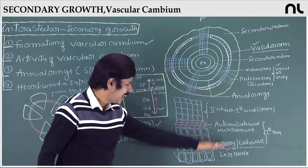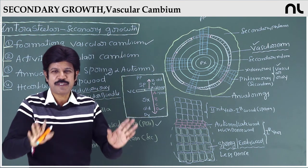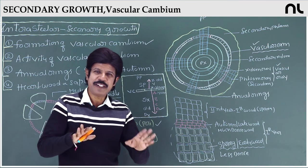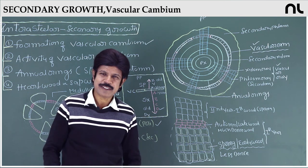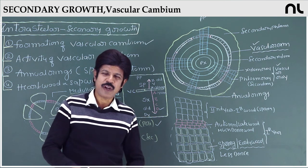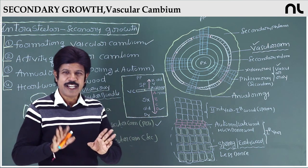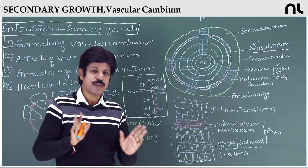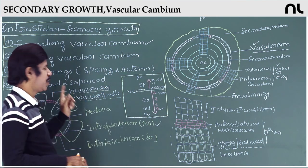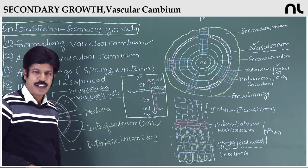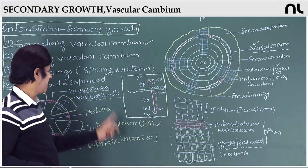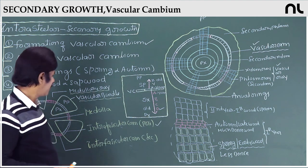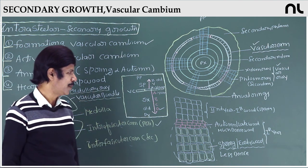The secondary xylem loses its power of conduction. The lumina of the vessels become infiltrated with food, aromatic substances, oil, and gums. This wood becomes dark in color and is called heartwood. The wood that still functions in conduction is called sapwood.